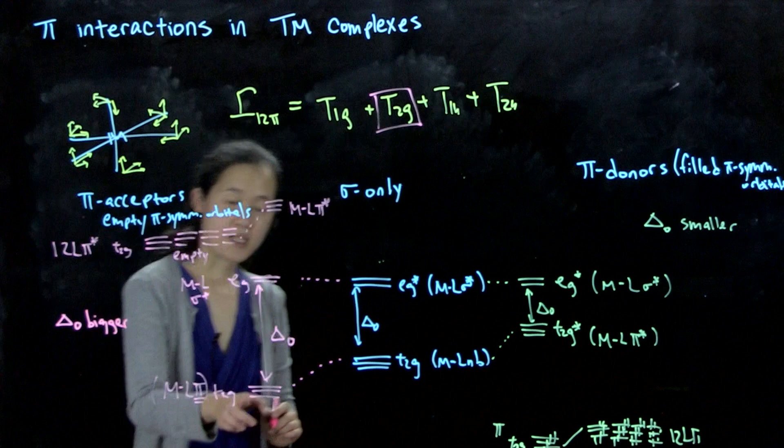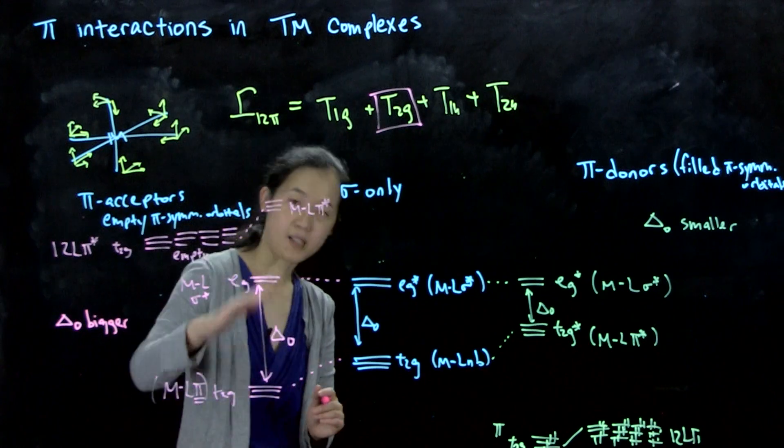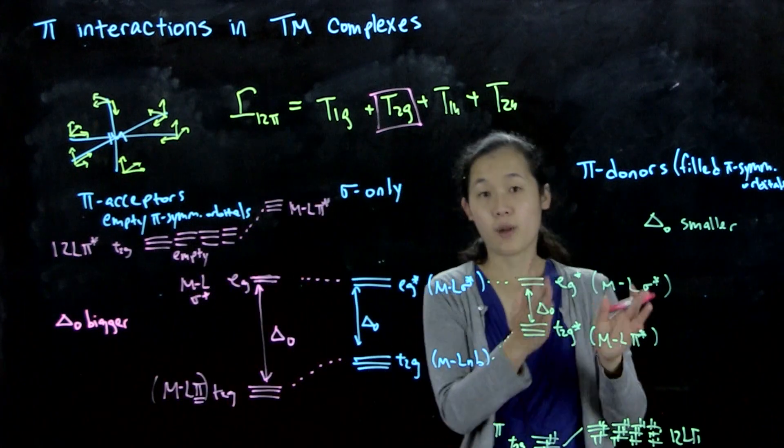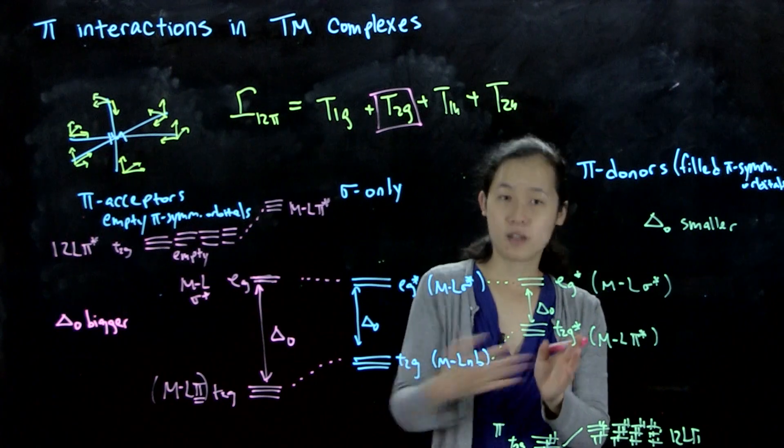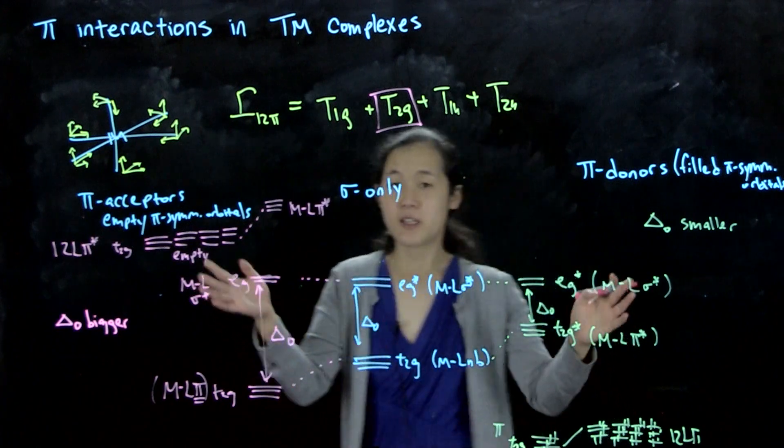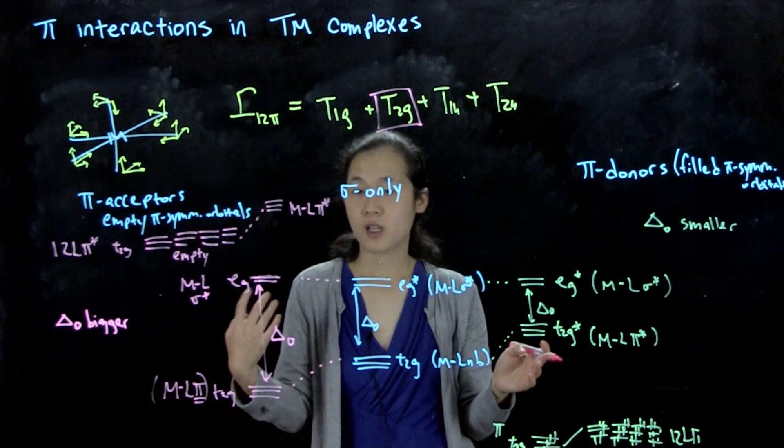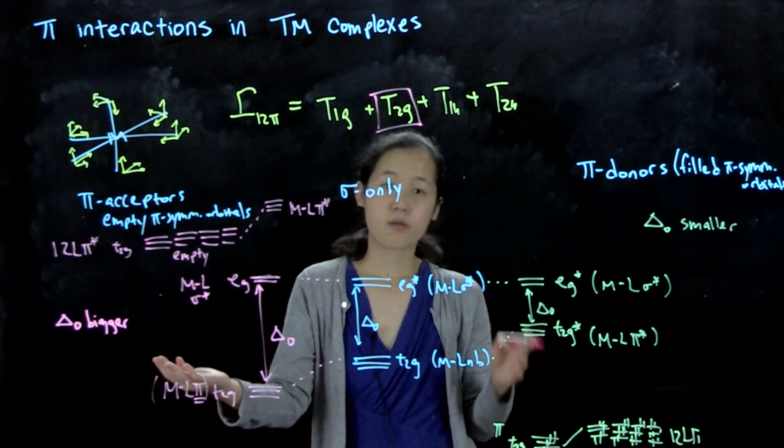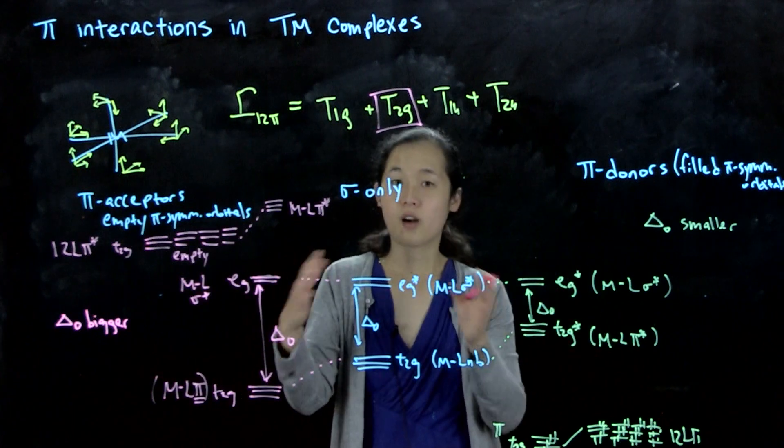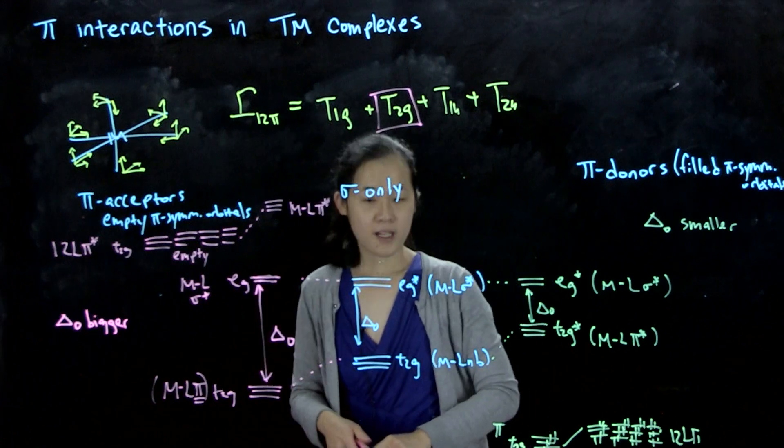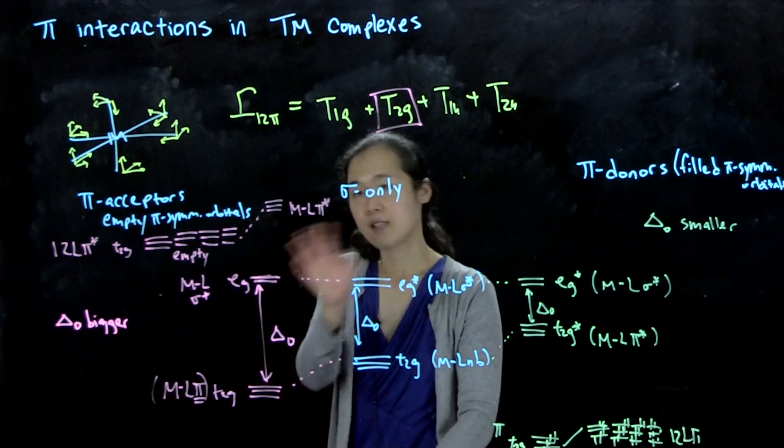This is because the T2G is pi-bonding, so it goes down in energy. Here, the T2G for pi-donors is anti-bonding, so it goes up in energy. This is why it's important to distinguish between a pi-acceptor versus a pi-donor, because it changes our final delta O. So we'll talk about what that means in the next video.